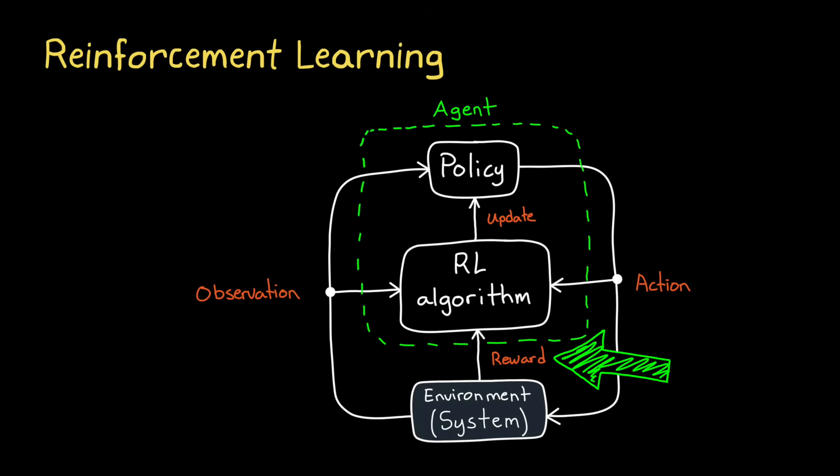And the agent uses a policy, which is essentially the controller, to decide actions based on the current state, and then it receives feedback from the environment in the form of rewards or penalties, which it uses to update its policy and improve future decision-making.